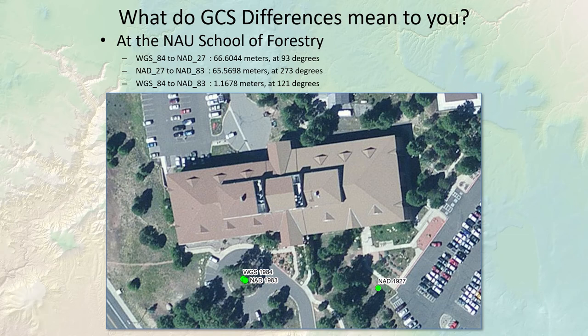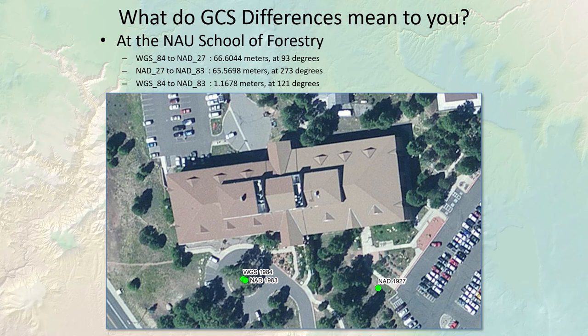It's tempting to be confused by all the datum and ellipsoid variations and hope it makes no difference — but unfortunately you cannot ignore it. Three points can have exactly the same latitude and longitude values but each uses a different geographic coordinate system, placing them in different physical locations. NAD 83 and WGS 84 are pretty close to each other, but NAD 27 is always the real outlier. If someone gives you coordinates in NAD 27 and your GPS is using WGS 84, it will take you 66 meters west of where you want to go.